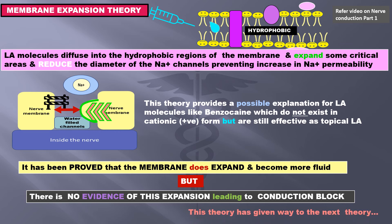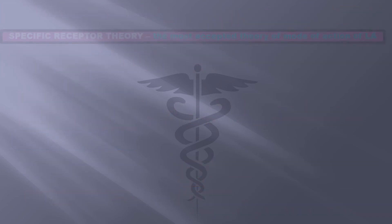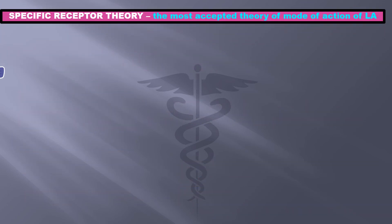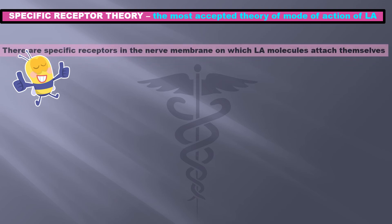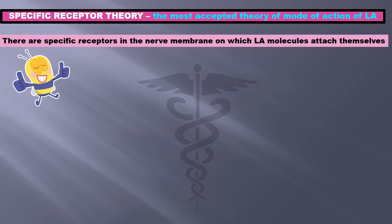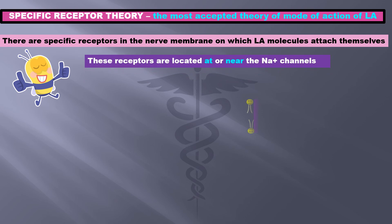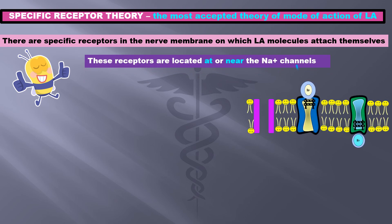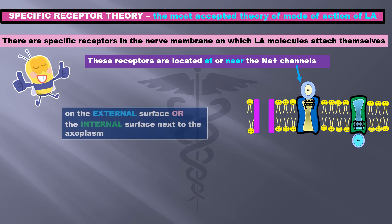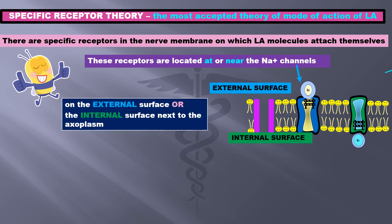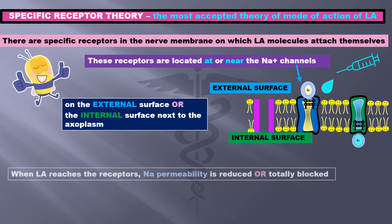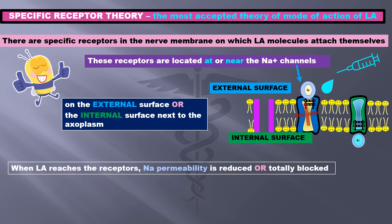The specific receptor theory is the most accepted theory of the mode of action of local anesthetics. There are specific receptors in the nerve membrane on which the local anesthetic molecules attach themselves. These receptors are located at or near the sodium channels, on the external surface or the internal surface next to the axoplasm. When local anesthetic reaches the receptors, sodium permeability is reduced or fully blocked, and nerve conduction stops.